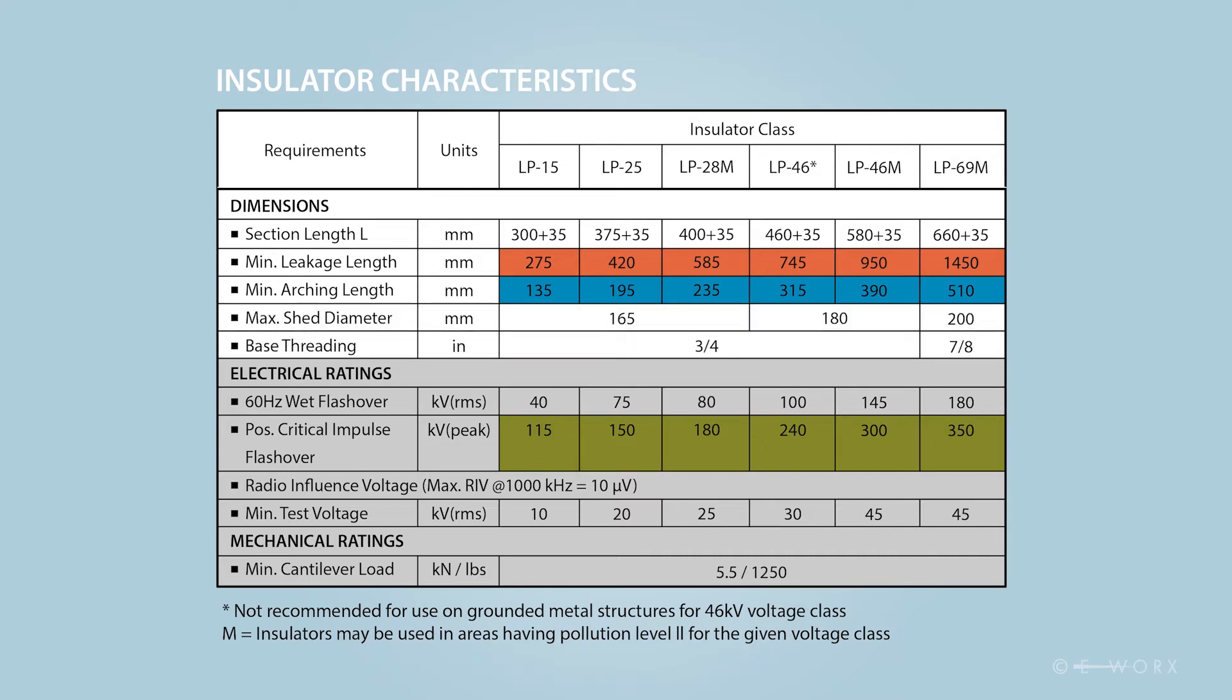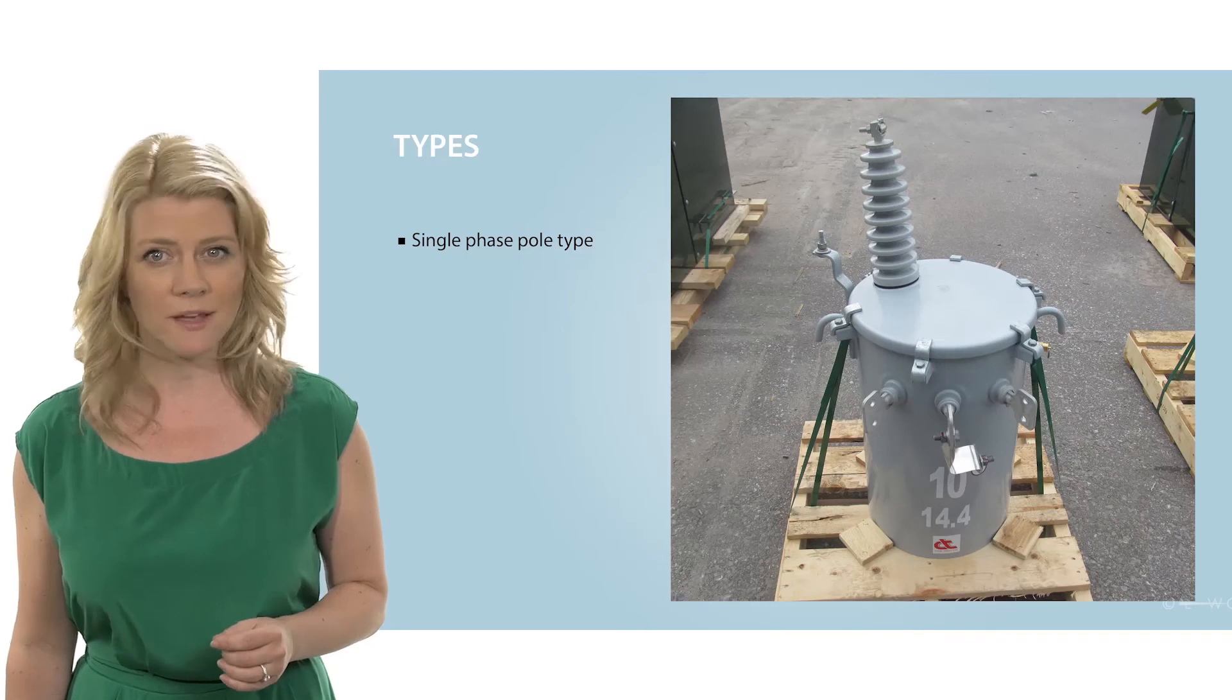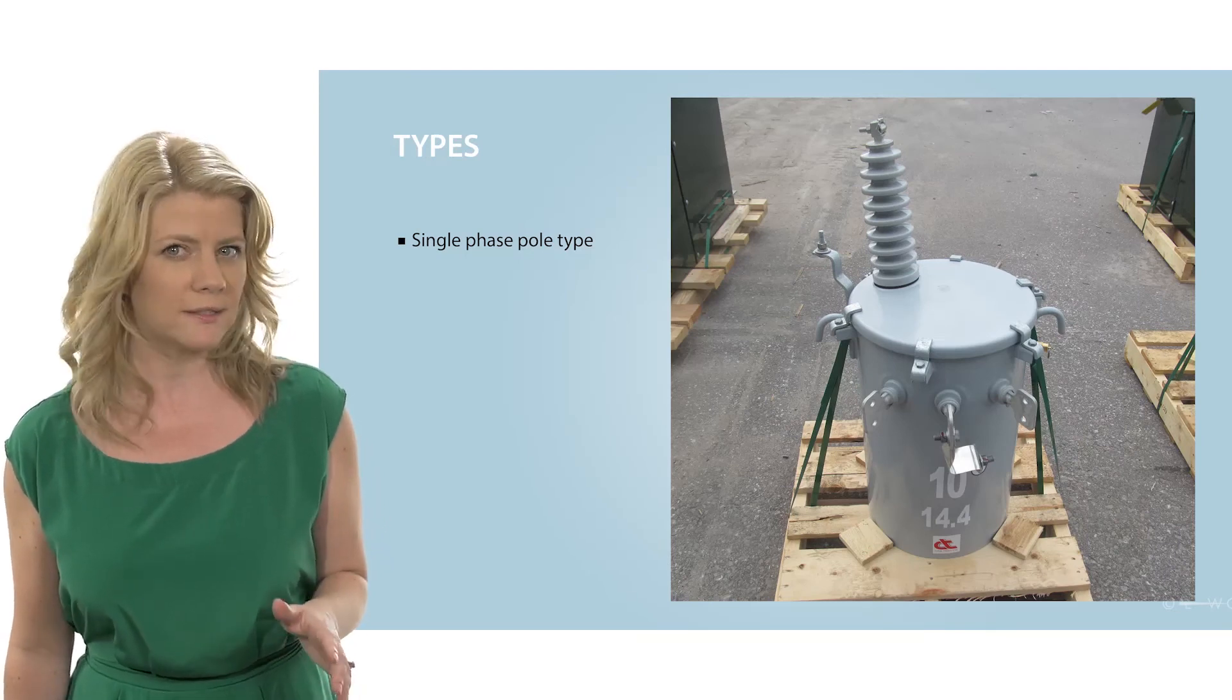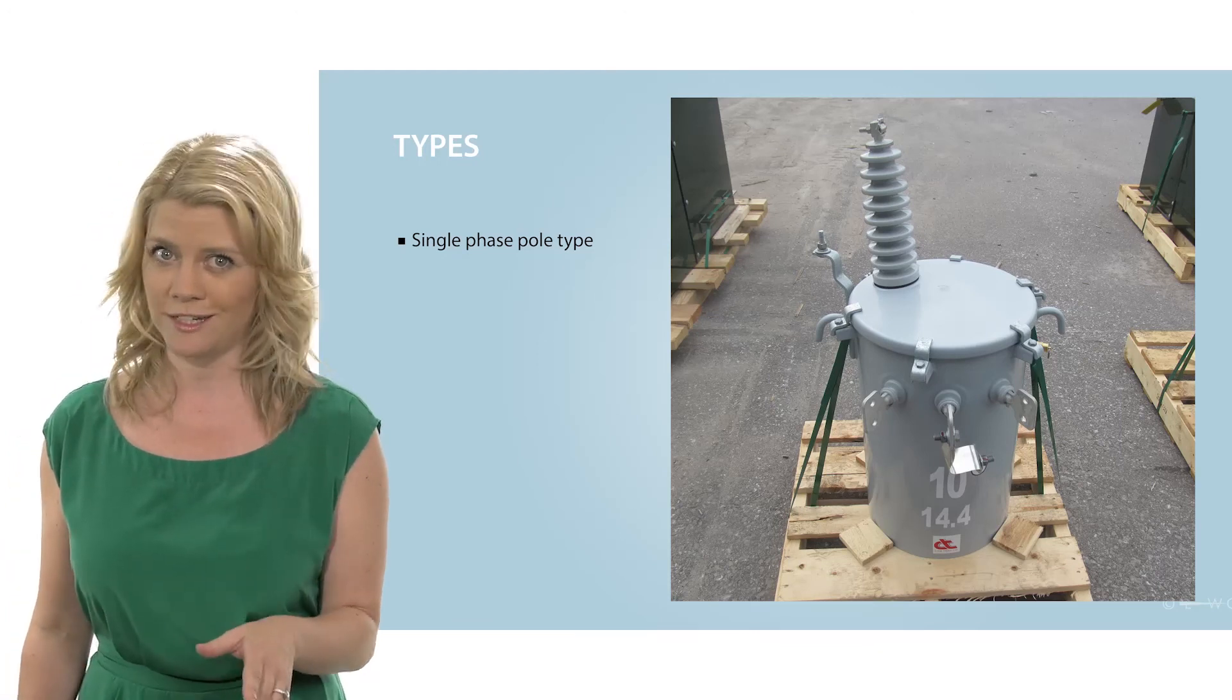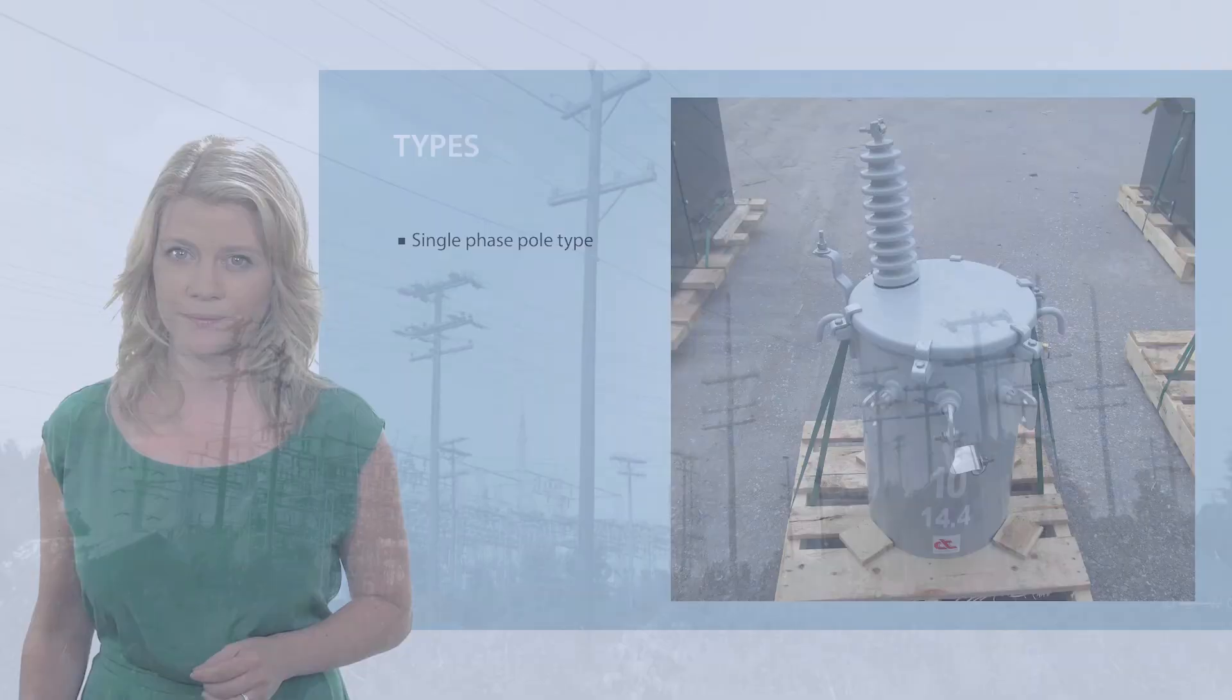The diameter and the base thread for attaching the insulator to the bracket are physical dimensions. Some utilities buy 75 kVA units without radiators since CSA C2.2 allows utilities, and only utilities, to deviate from the standard.